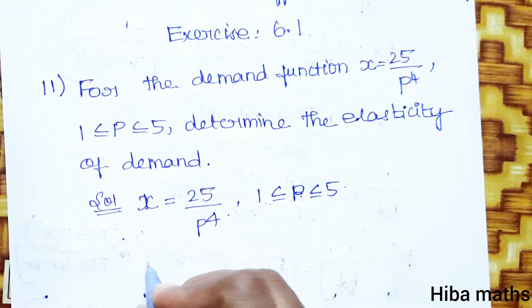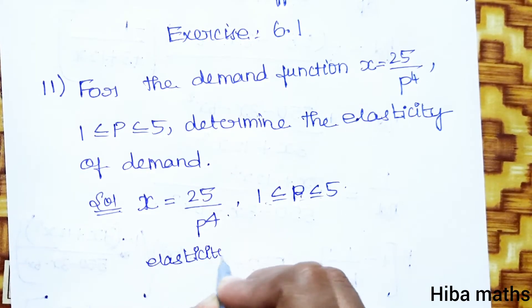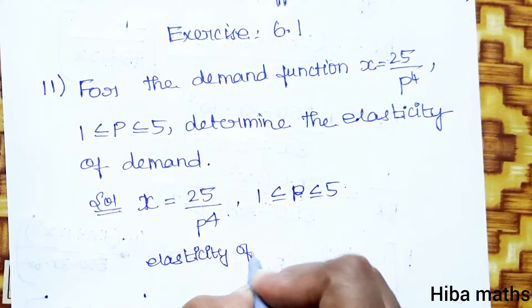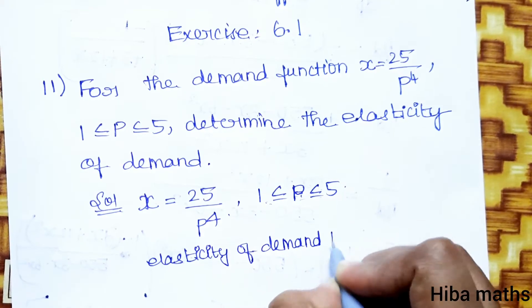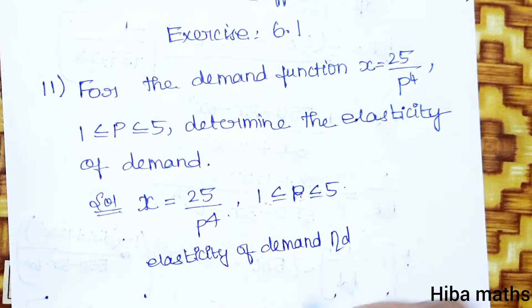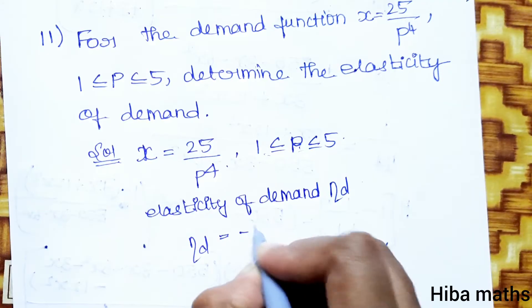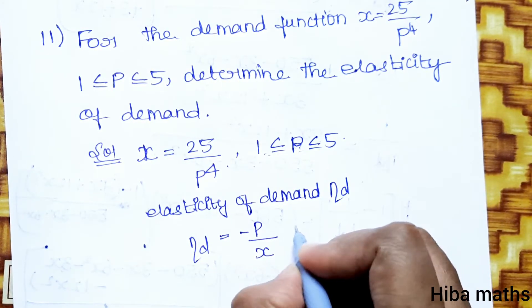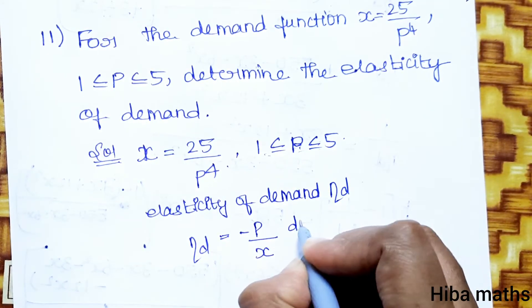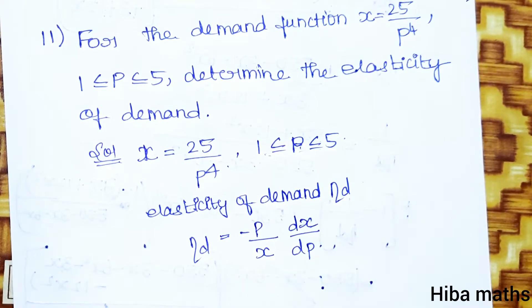Elasticity of demand — the formula is: eta d is equal to minus p by x, multiplied by dx by dp.